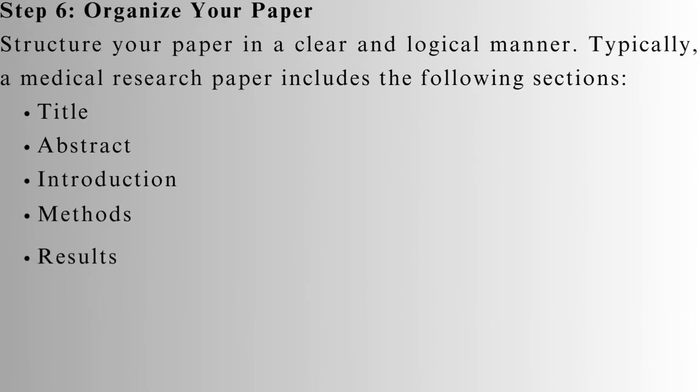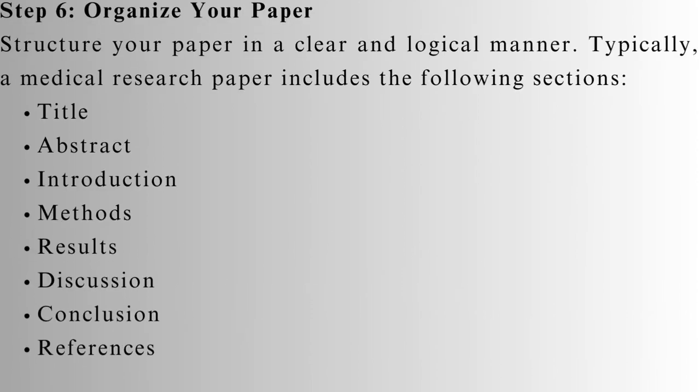Step 6: Organize your paper. Structure your paper in a clear and logical manner. Typically, a medical research paper includes the following sections: Title, which reflects the main focus of the paper; Abstract, which summarizes the entire paper, including the research question, methods, results, and conclusions.